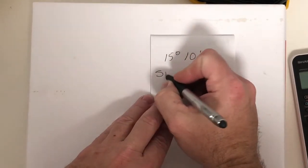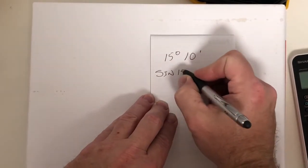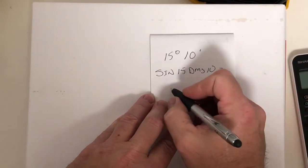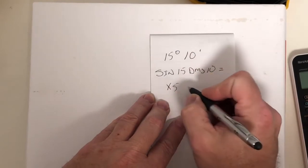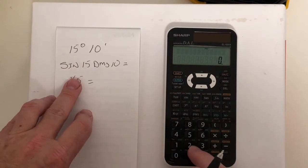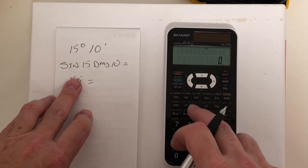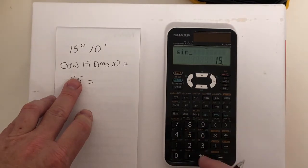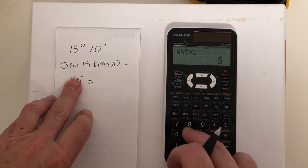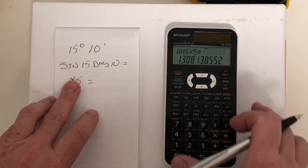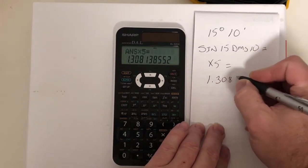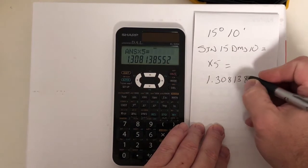So it's sine 15 DMS, which is degrees, minutes, seconds, 10 equals times five equals.